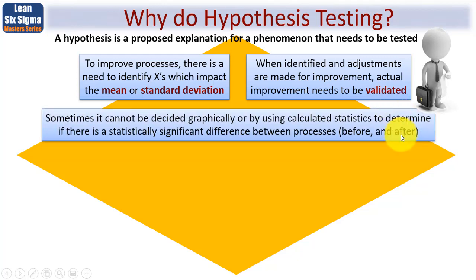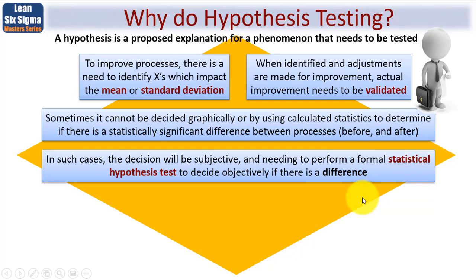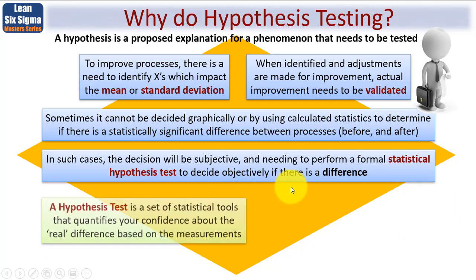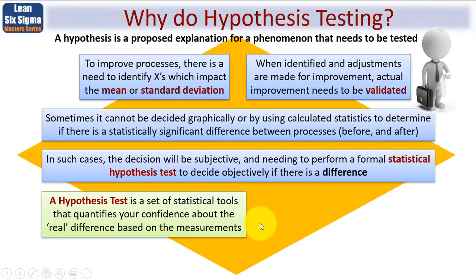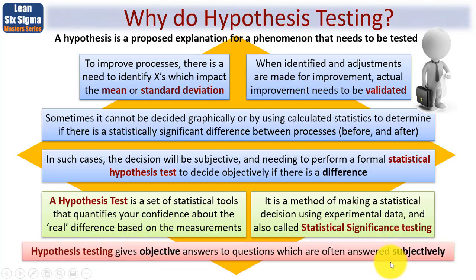So sometimes it cannot be decided graphically or by using calculated statistics to determine whether or not there is a statistically significant difference between the processes, that is before and after. In such cases, the decision will be subjective and you'll want to perform a formal statistical hypothesis test to decide objectively if indeed there is a difference. So a hypothesis test is nothing more than a set of statistical tools that quantifies your confidence about the real difference based on the measurements. It's a method of making a statistical decision using experimental data, also called statistical significance testing. Hypothesis testing gives objective answers to questions which are often answered subjectively.